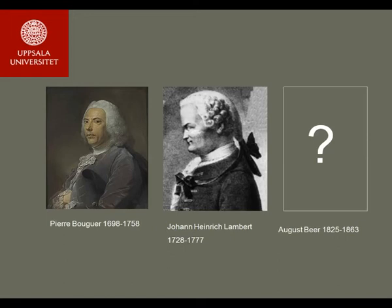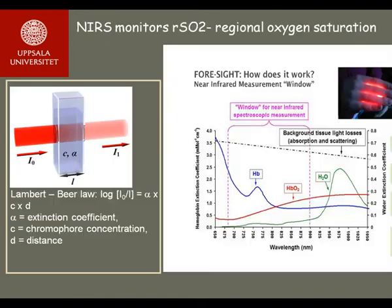The Beer-Lambert Law relates the decrement in transmitted light intensity to the absorption properties of the material and the distance the light travels through it. NIRS is a method to measure regional oxygen saturation, RSO2, of tissue hemoglobin by determining the difference in intensity between transmitted and received near-infrared light, according to the Beer-Lambert Law.